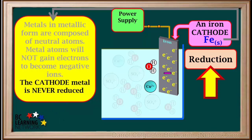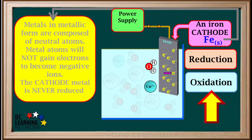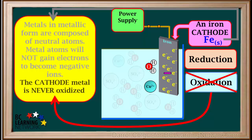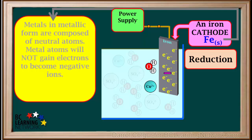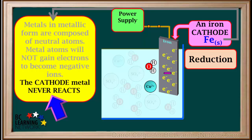Also remember that reduction is all that occurs at the cathode — oxidation never occurs at a cathode. So we can say that the cathode metal is never oxidized. Because the cathode metal is neither reduced nor oxidized, we can say that the cathode metal never reacts in an electrolytic cell. So even though our cathode is iron metal, the only possible species that can be reduced are water or copper 2+ ions.